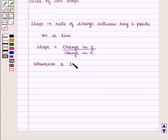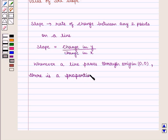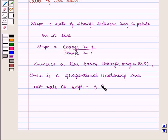Whenever a line passes through origin (0,0), there is a proportional relationship, and unit rate or slope is given by change in y, y-0, by change in x, x-0.